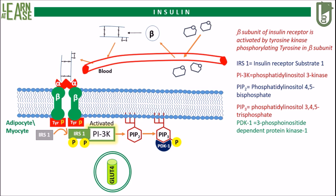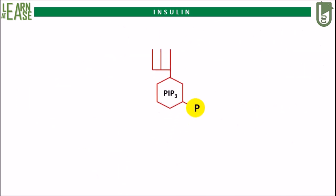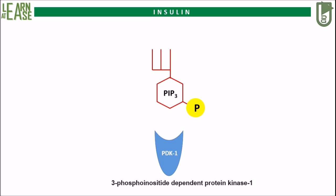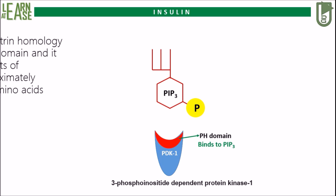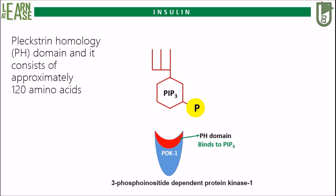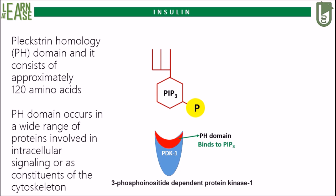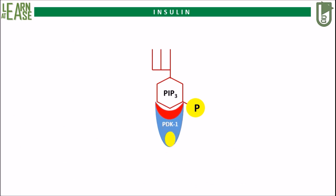Activated PDK1 will recruit protein kinase B and phosphorylates it. This is the wonderful mechanism carried by PDK1, and let us see this mechanism in detail. Here PIP3 and PDK1 are shown. PDK1 possesses a PH domain by which it can bind to PIP3. As additional information, the term PH stands for Pleckstrin homology domain and it consists of approximately 120 amino acids. The PH domain occurs in a wide range of proteins involved in intracellular signaling or as constituents of the cytoskeleton. There is another domain in PDK1, that is the kinase domain. When PDK1 binds to PIP3, its kinase domain will get activated, and it will then recruit protein kinase B and phosphorylate it.